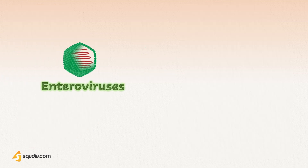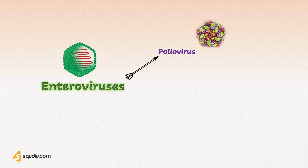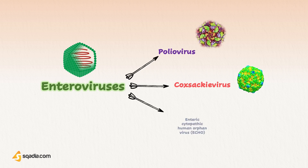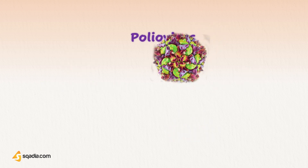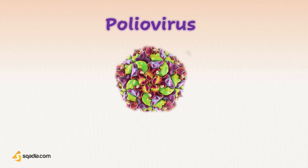Enteroviruses are Picornaviridae with three serotypic groups: Poliovirus, Coxsackievirus, and Enteric Cytopathic Human Orphan virus — or echovirus. Let's discuss them one by one.